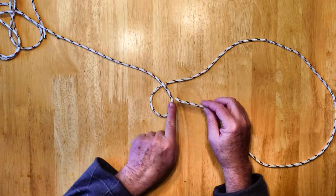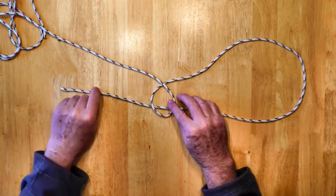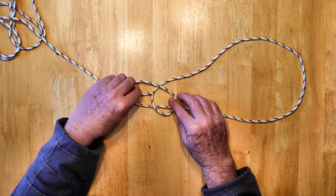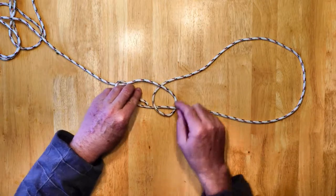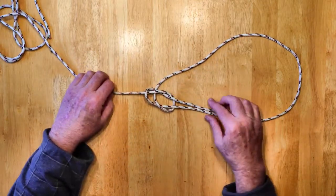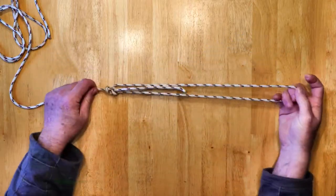So if I go over and under, I want to alternate that. I want to go over again. And now I want to follow my working end back through this loop. Now I'm going to grab here and here and give it a tug. And there's my loop.